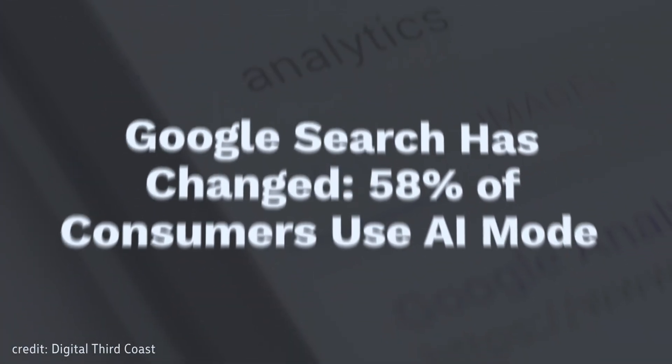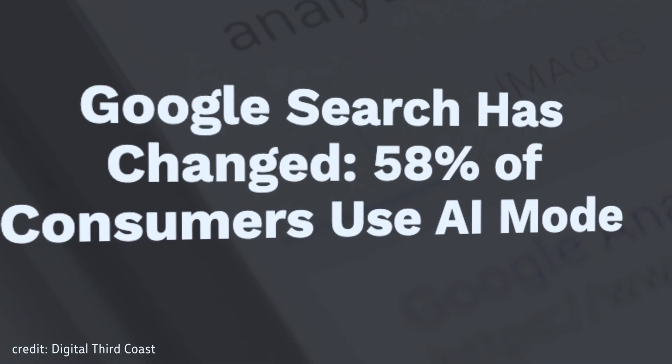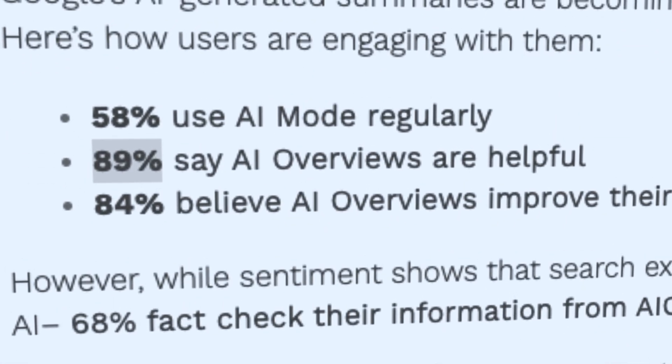Let's talk about why keyword research has changed. It really comes down to the fact that people are now interacting with Google Search very differently. We're already starting to see some data come out of the US market, which was the first market to get AI overviews and AI mode. Early data shows that 58% of people do use AI mode and AI overviews, and 89% of those people say they find it really, really helpful.